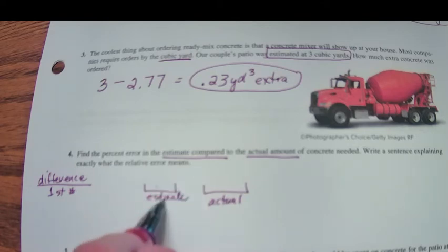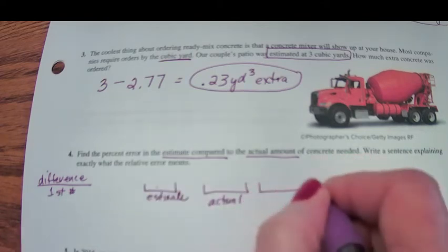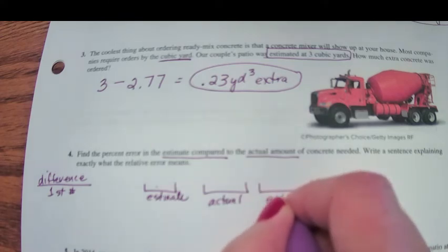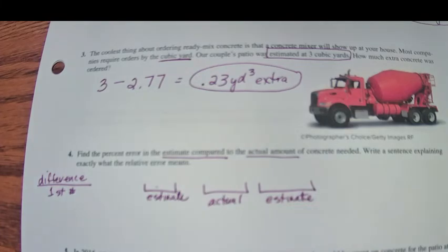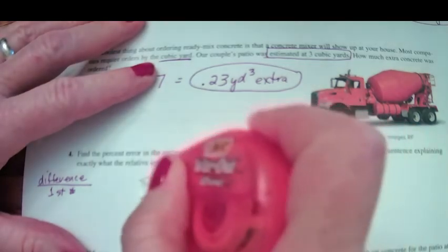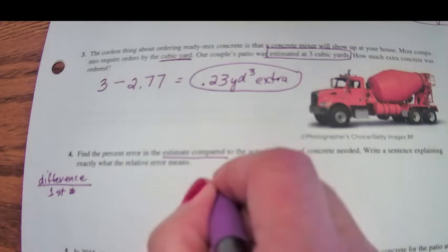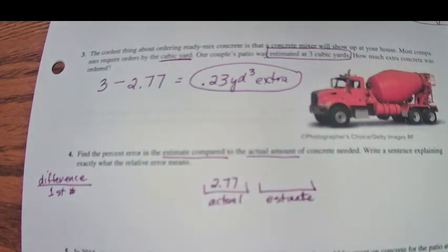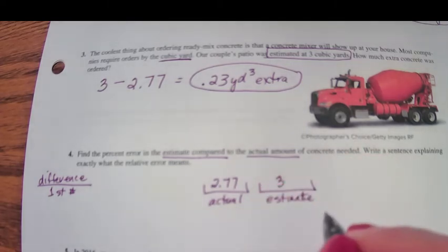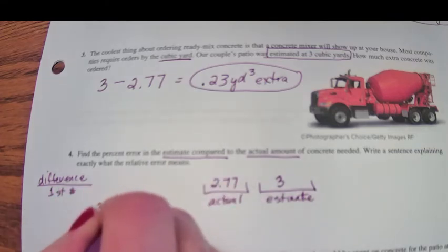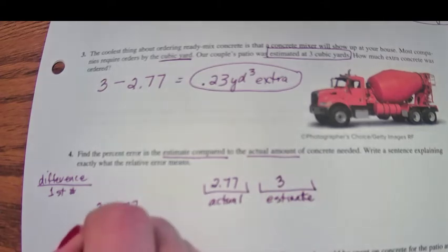Write a sentence explaining what the relative error means. Actually, we're not going to use the estimate as the denominator. We're going to say we came up with the actual first. So the actual was first, and then we came up with the estimate. We should use the actual as the real number that we know because that is the number that we know. That is actually what is needed for this patio. So the actual was we need 2.77 cubic yards, and we estimated 3 yards.